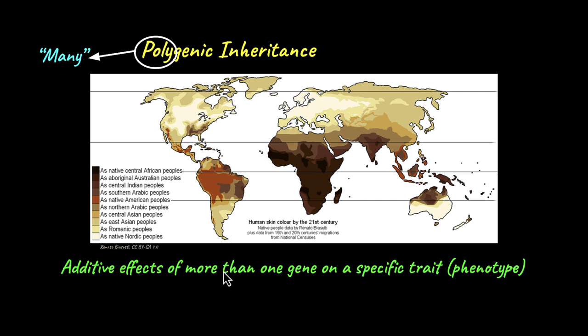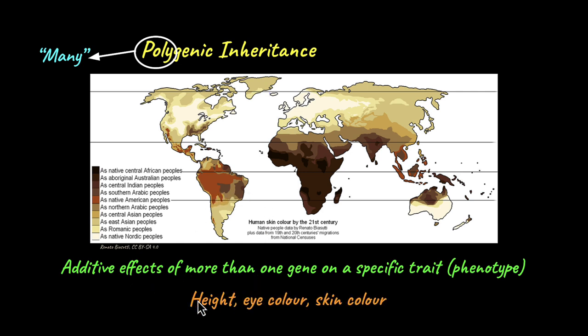I will explain that in just a while. Before we move on with polygenic inheritance, here are a few more traits that are controlled by polygenic inheritance: height, eye color, and skin color in human beings.